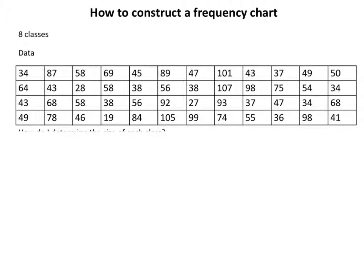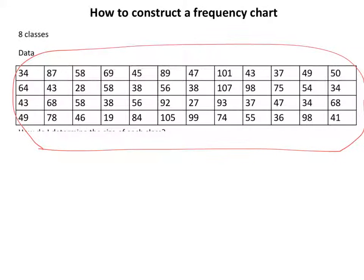You are given two things when you have to construct a frequency chart. You should be given data. This is all our data. We don't know what it represents yet, but we know that we have certain figures that we need to count and calculate. And the second thing that we need is we need to know how many classes we have, and we're told here that we have eight classes.